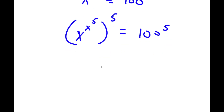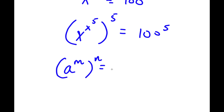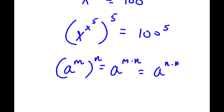Now, if I have something in the form a to the power of m to the power of n, this is equal to a to the power of m times n. And m and n — I can actually change the place of these two, so this is going to equal a to the power of n times m.